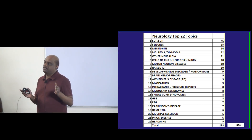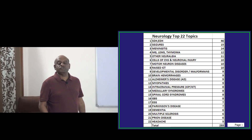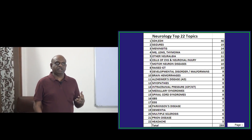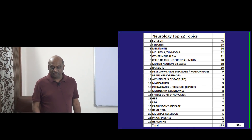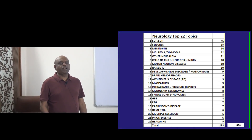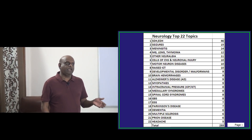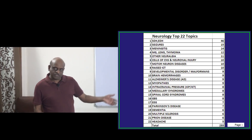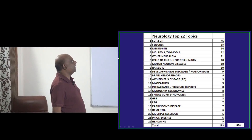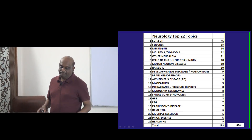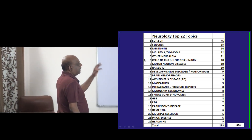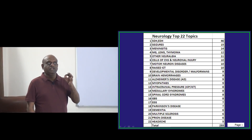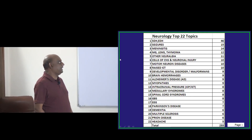Let us discuss general medicine for the next one month until you get a good hold — that is the best thing I can do for you. On the Umedico app, you have the AIIMS, JIPMER, PGI, DNB — all these question banks and previous question papers — discussion is already there. In neurology and general medicine, what are the top 22 topics you need to master based on the last 15 years of the All India and NEET PG question bank?